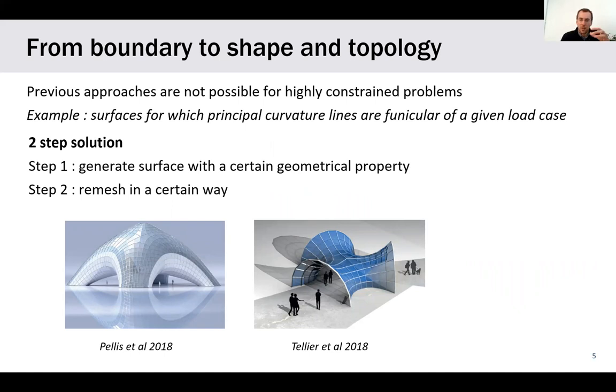For example, if you want the surface for which the principal curvature lines, the lines that give you a lot of properties to simplify fabrication of grid shells in particular, surfaces for which these principal curvature lines are funicular for a given load case, that's a typical example for which previous approaches do not work well. In general, people do a two-step process. In the first step, they will generate a surface with a certain geometrical property that guarantees that in a second step, a remeshing will allow you to obtain the properties.